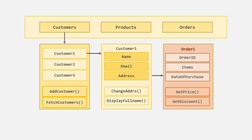For example, an order object can have the order ID, items which were purchased in that order, date and time when the order was made, etc. And it can also have methods to calculate the total price of the order, adding discount, etc. In this example, order one is an object. In this object, we have the order ID, items, and date of purchase as its properties — and a property is nothing but a state. This order one object also has a getPrice method and a getDiscount method, so this is the behavior for that object. Using these methods, we execute some logic, which is why a method is also called the behavior of that object.